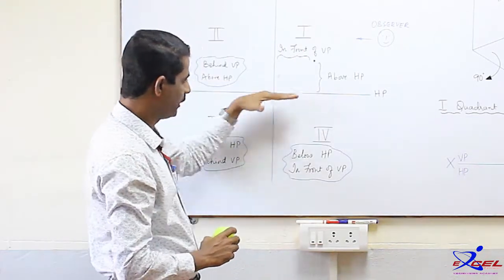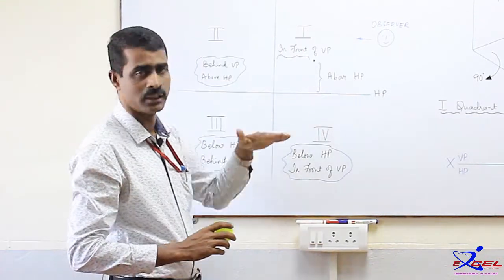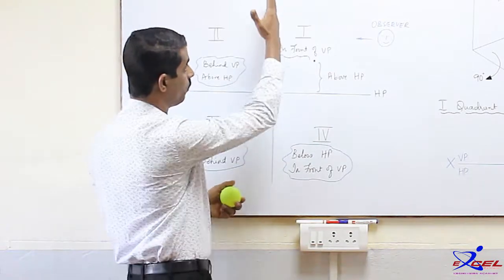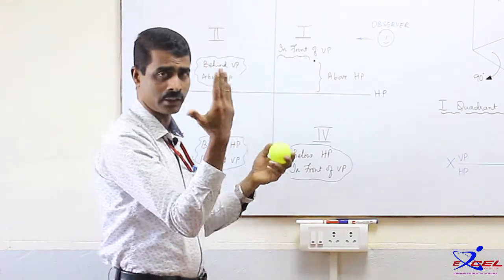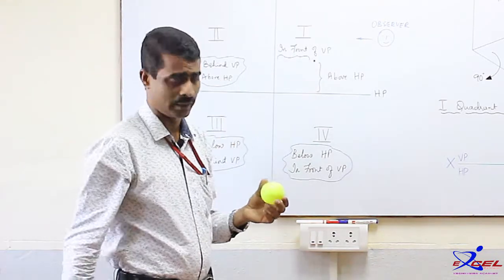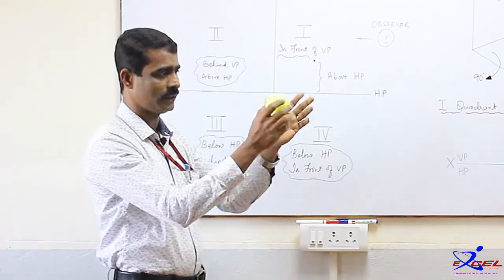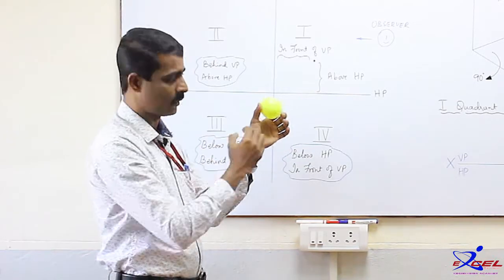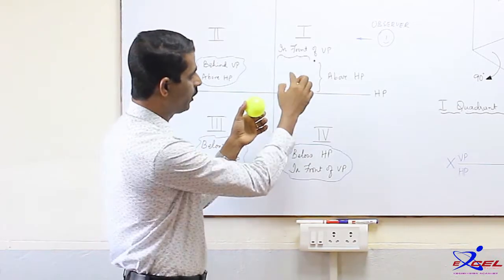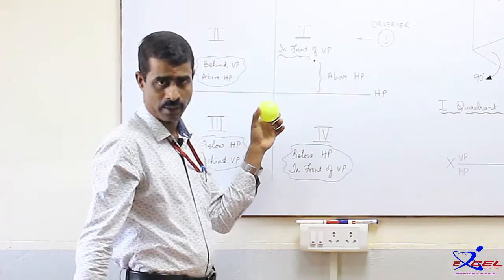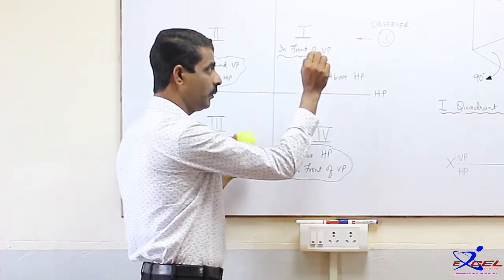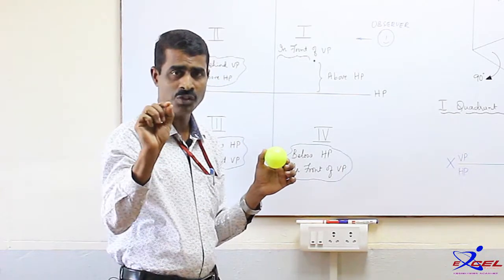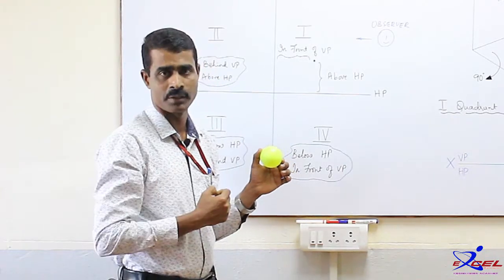The horizontal plane sections the space in the horizontal direction; the vertical plane sections it in the vertical direction. So, this entire space has 4 equal parts. This is one of the quadrants. Suppose your point is in the first quadrant — how shall we describe it?